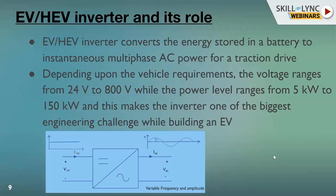An inverter converts the energy stored in the battery into multi-phase AC power for the traction drive. Strictly speaking, it does a DC-to-AC conversion — the DC battery voltage is converted to the AC power required by the motor. Depending on vehicle requirements, the DC voltage can range from 24 volts to as high as 800 volts, while the power level — depending on the size of the vehicle — can range from 5 kW to as high as 150 kW. This makes the inverter one of the biggest engineering challenges while building an EV.